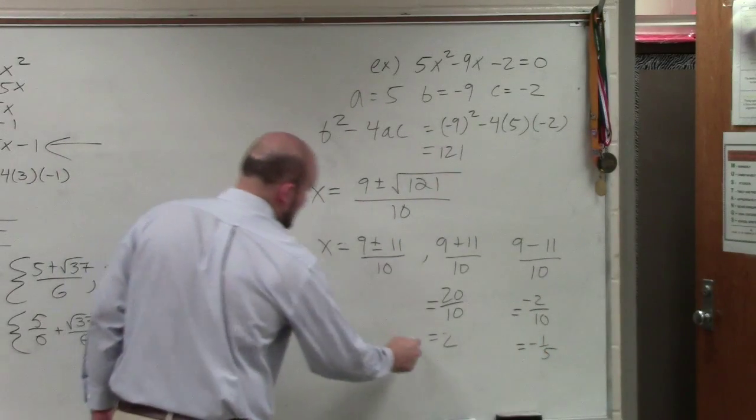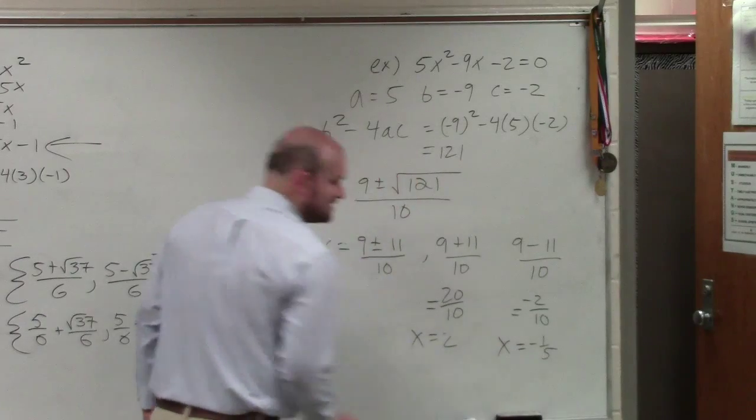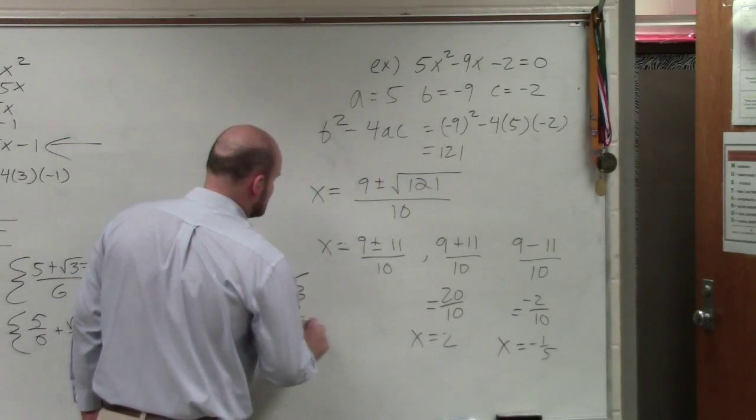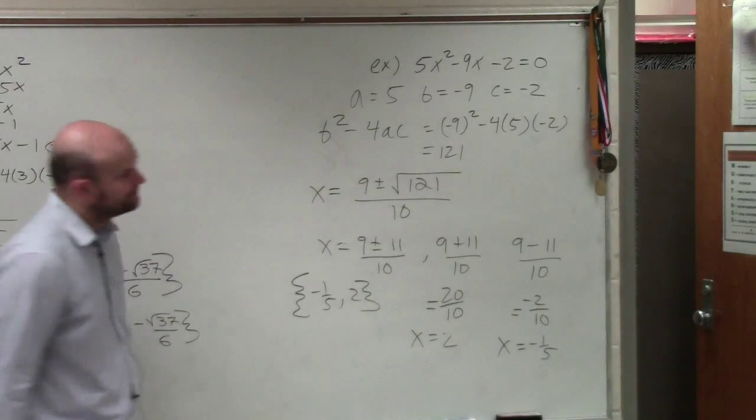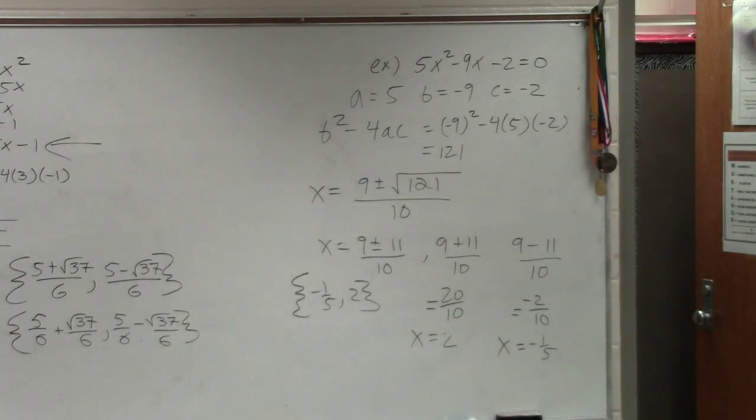So your solution set, you could say x equals 2, x equals negative 1 fifth, or you can write it as a solution set as negative 1 fifth, comma, 2. And that's all you guys are going to do in your homework.